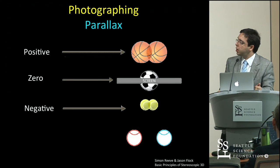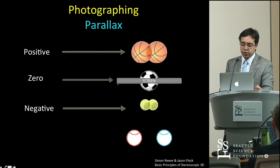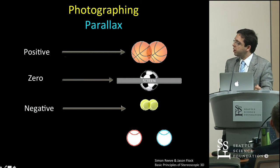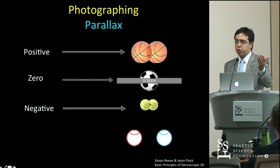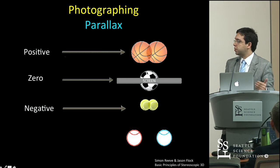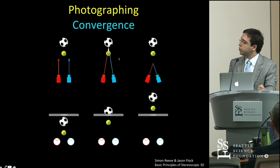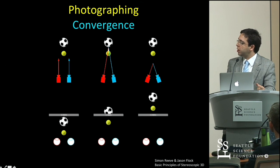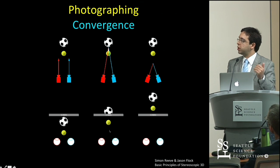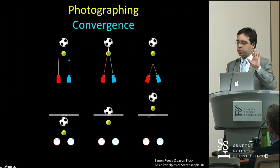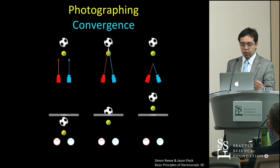Another thing we can control in 3D is where the objects will appear, and this is called parallax. Zero parallax means the object stays at the depth of the screen. Everything positioned ahead of the screen will appear towards the viewer, and objects farther away will stay behind the screen. You can select the point that will be at the depth of the screen by converging both cameras to that point — for example, converging to the soccer ball places it at screen depth, while the tennis ball will appear in front of the screen. This is something you can control depending on how you want to present the images.